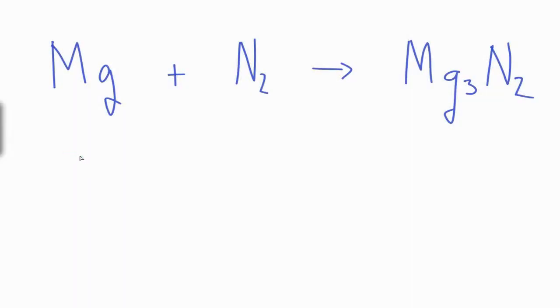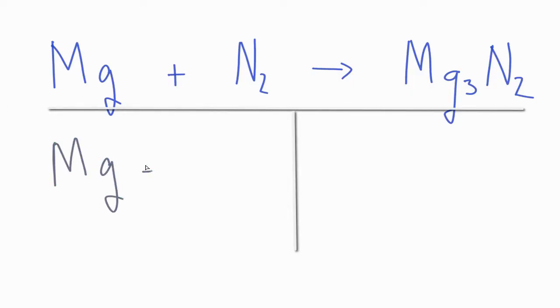So to balance this equation, let's first count the atoms on each side. We have on the reactants, magnesium, and we have one of those. Nitrogens, we have two nitrogens.